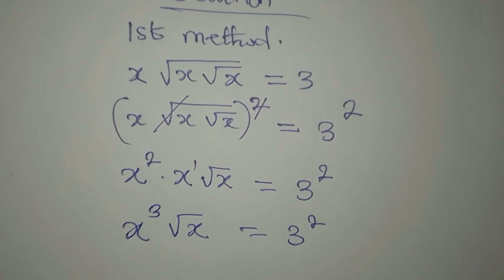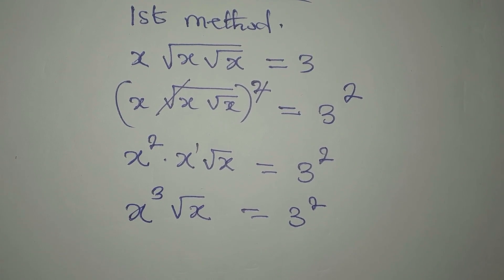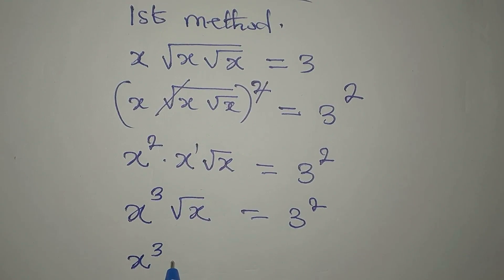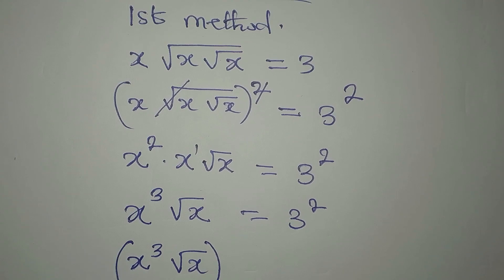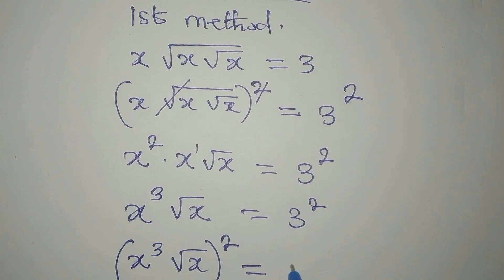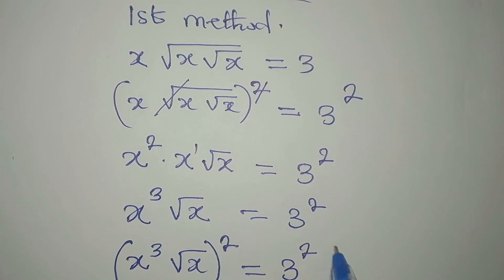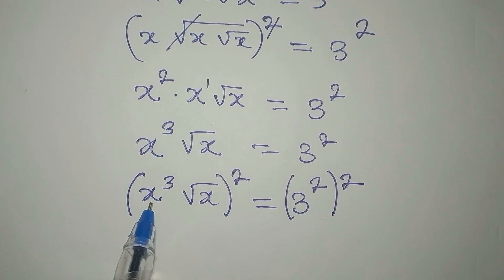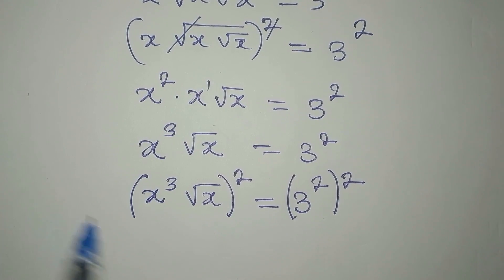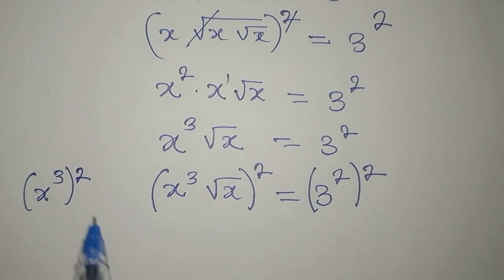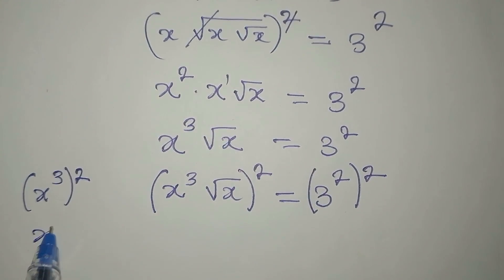To remove this square root, we square again. So we have x to the power of 3 times root x, all squared, equal to 3 squared, and that side is squared again. For x to the power of 3, squaring it means we have x to the power of 3 to the power of 2. By the law of indices, we multiply the powers, giving us x to the power of 6.